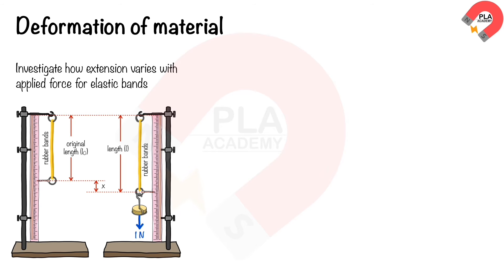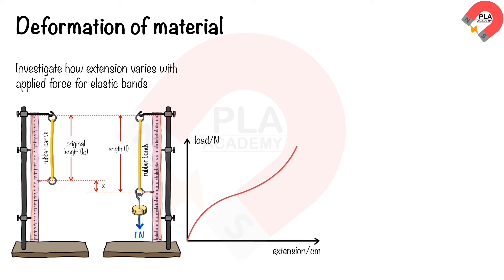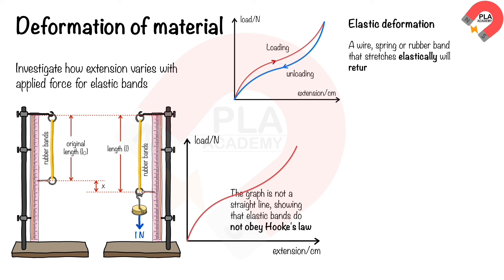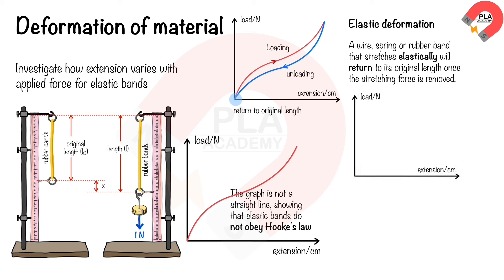Investigating an elastic band: if you stretch an elastic band with increasing loads, the graph of load against extension is not a straight line, showing that elastic bands do not obey Hooke's law. If a material stretches and fully returns to its original length when the load is removed, this is called elastic deformation — a wire, spring, or rubber band behaving this way returns to its original length once the stretching force is removed.